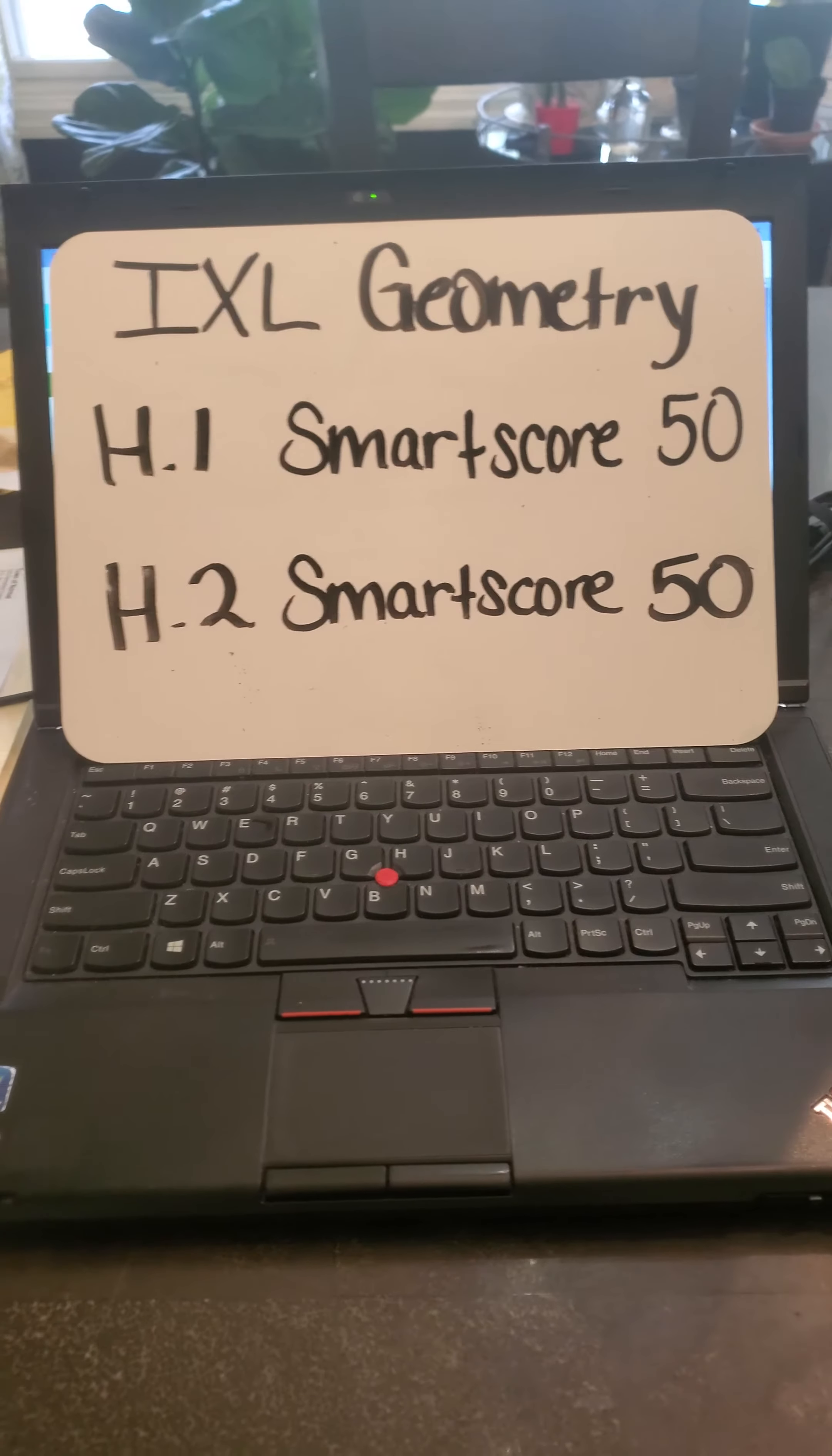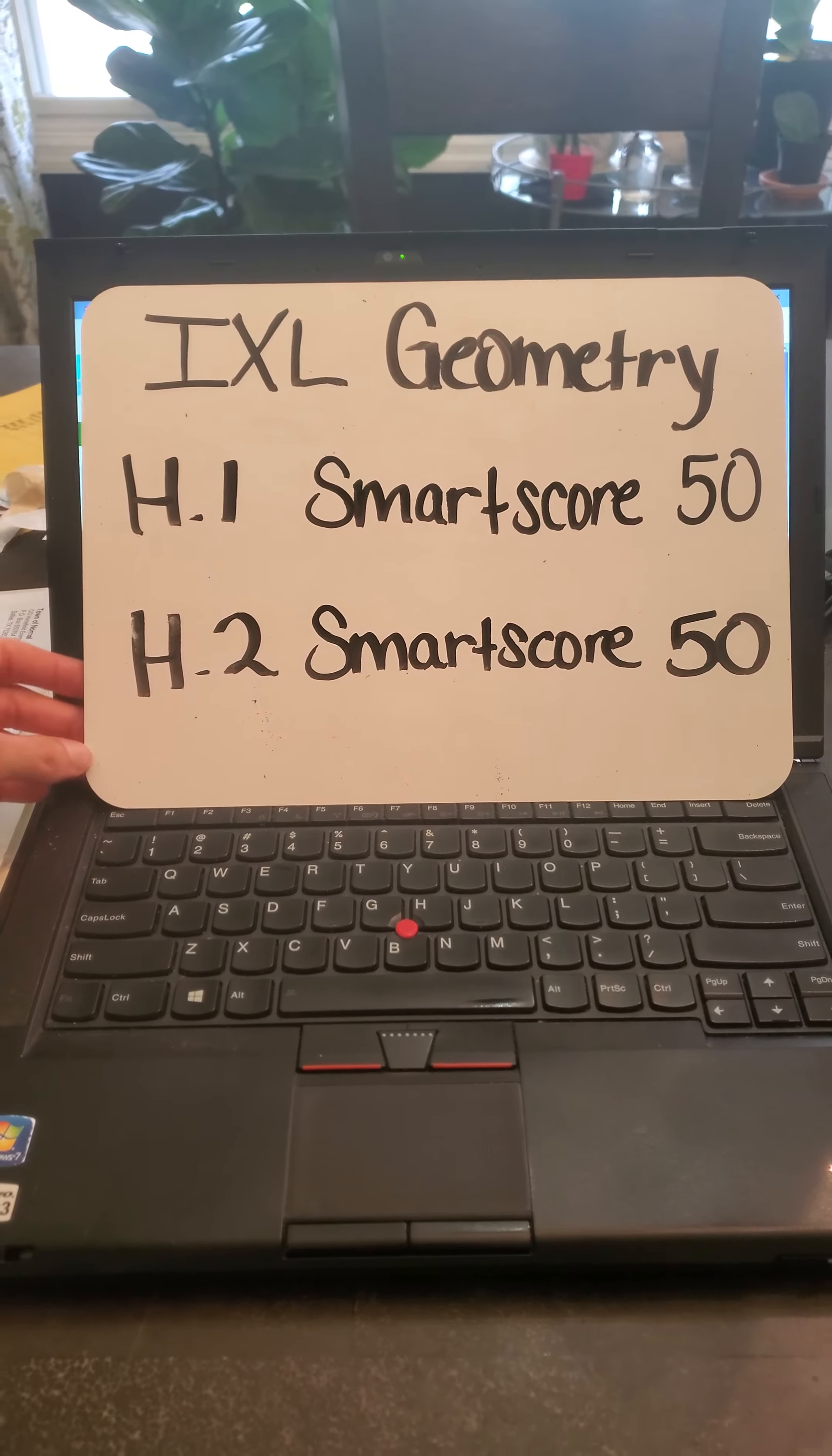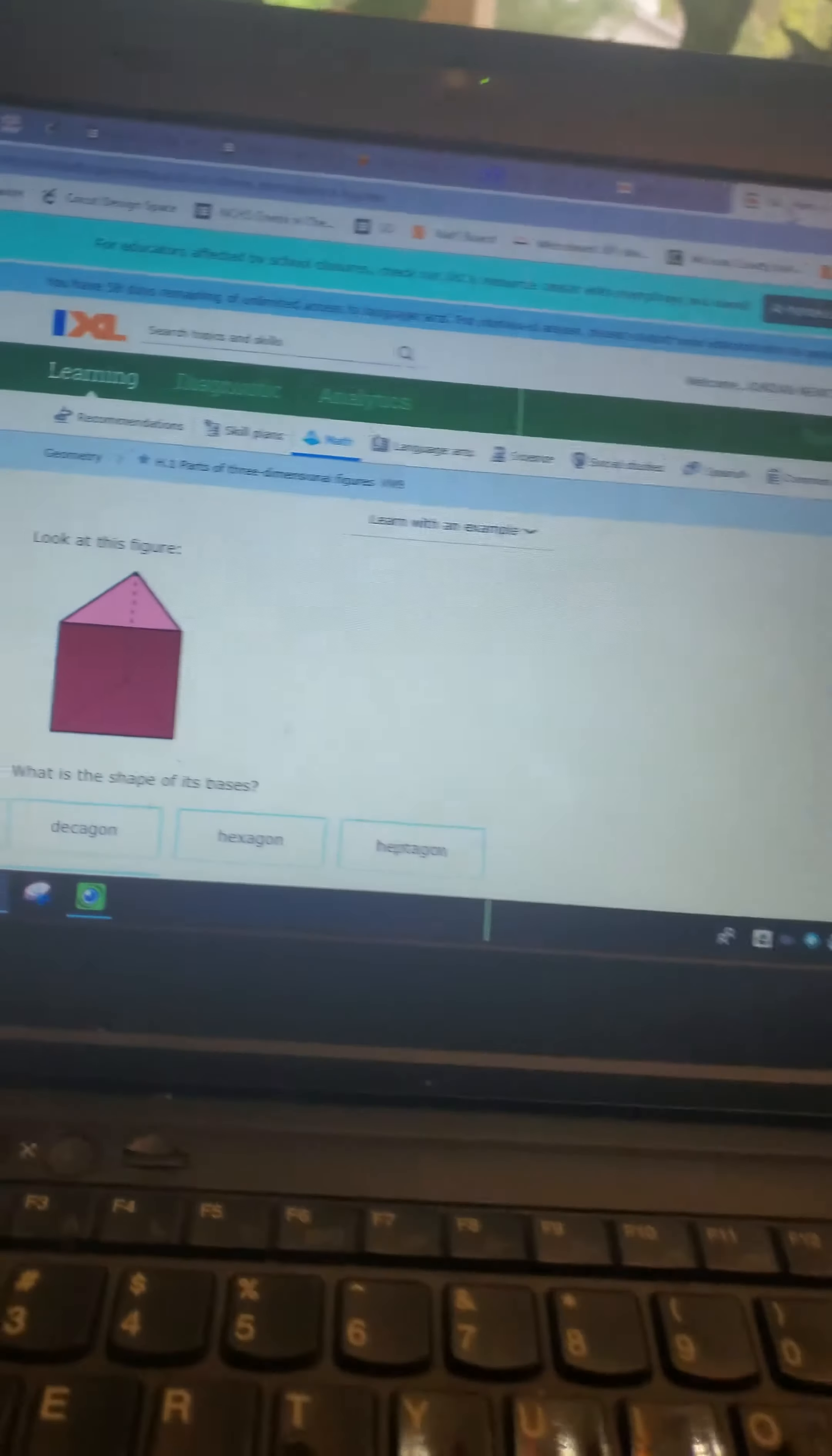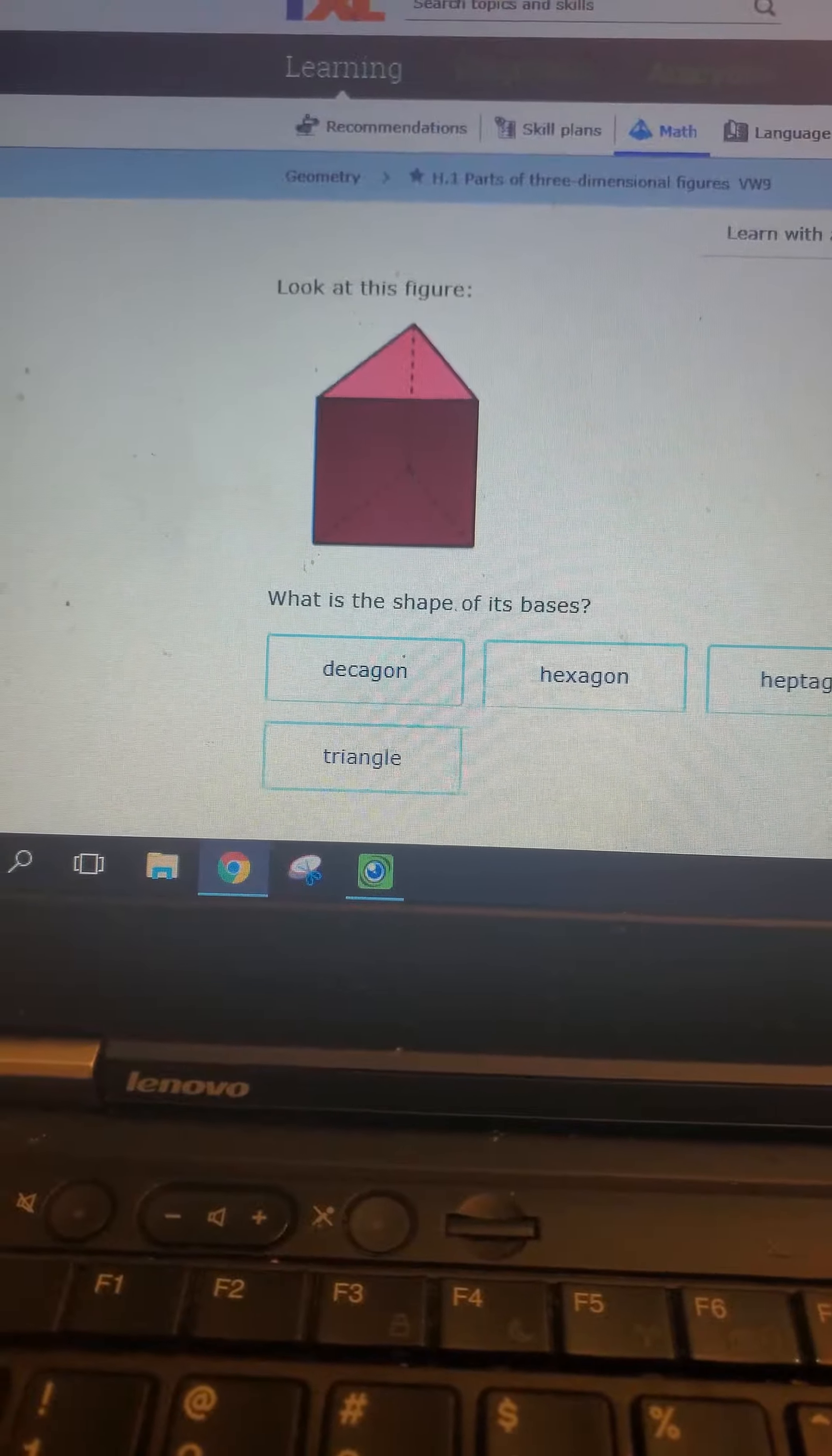So you're going to do sections H.1 in geometry to get to a smart score of 50 and H.2 to get to a smart score of 50. So I'm going to go through those with you right now and show you some of the vocabulary that you might not know on your own already, although you will have seen some of these throughout your time in elementary and junior high math.